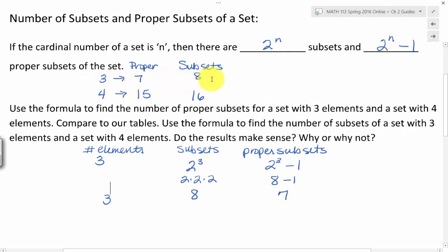And if we look at what we copied from the previous page, three element set had eight subsets, seven proper subsets. So that works for that one.